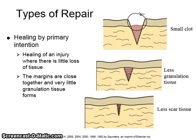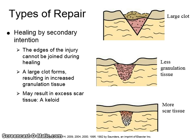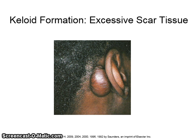Healing by primary intention occurs such as in a surgical incision where clean edges of the incision are joined with suture and form only a small clot — in this case, less scar tissue forms. Healing by secondary intention involves an injury in which tissue is lost, so the edges of the injury cannot be joined during healing. A large blood clot forms resulting in increased granulation tissue and may result in excess scar tissue, such as a keloid. Healing of a tooth extraction site is an example of healing by secondary intention. A keloid is excessive scarring in skin that appears raised and extends beyond its original boundaries.